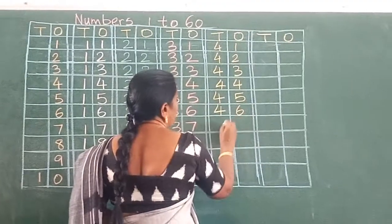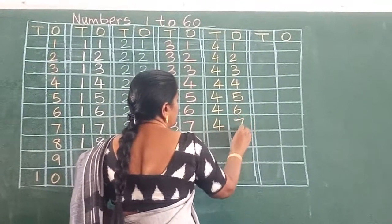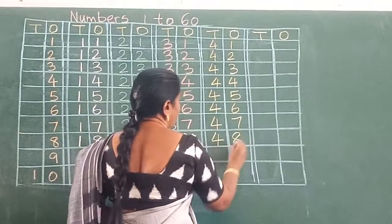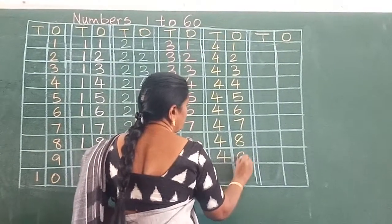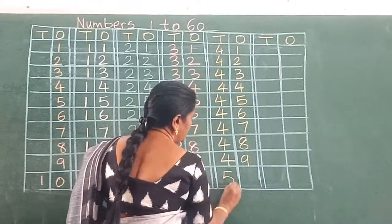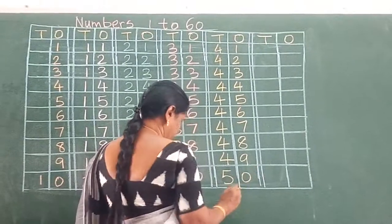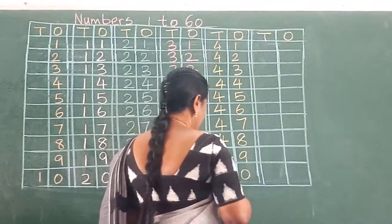4, 6, 46. 4, 7, 47. 4, 8, 48. 4, 9, 49. 5, 0, 50. And the next slide.